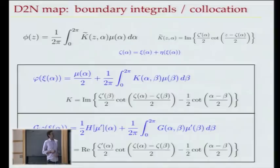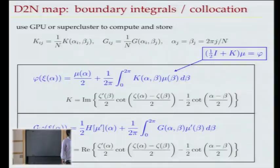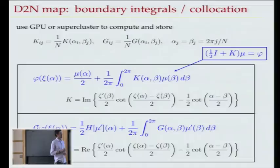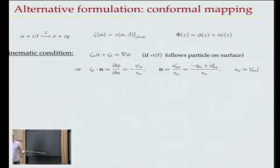That's a way to compute Dirichlet-Neumann operators. To do it numerically, you just discretize everything. Since everything is smooth, the trapezoidal rule converges exponentially fast. You form these matrices, integration just becomes a matrix-vector multiply. You don't need to discretize with many points to reach machine precision because things converge exponentially fast.